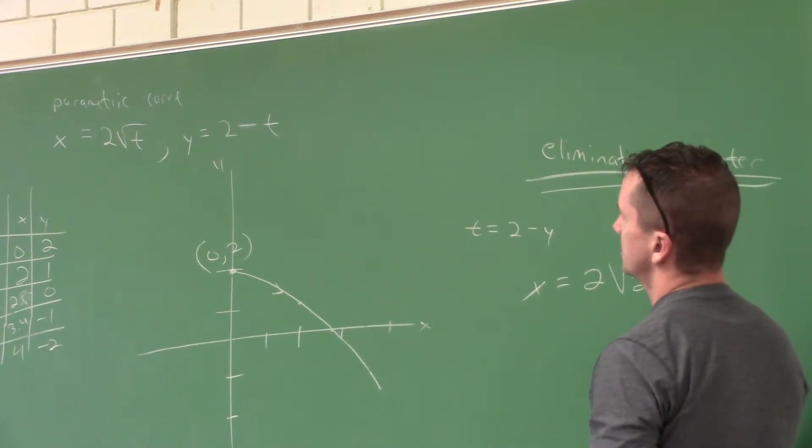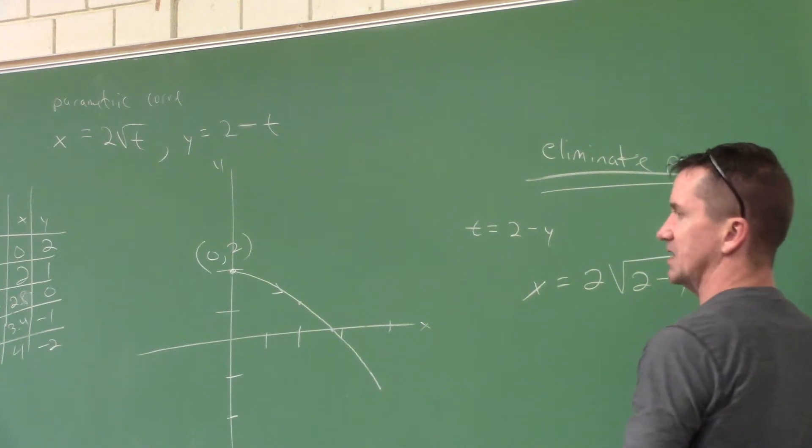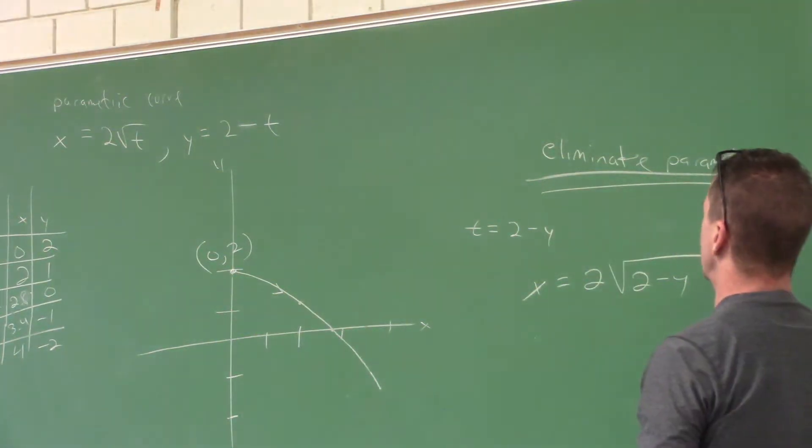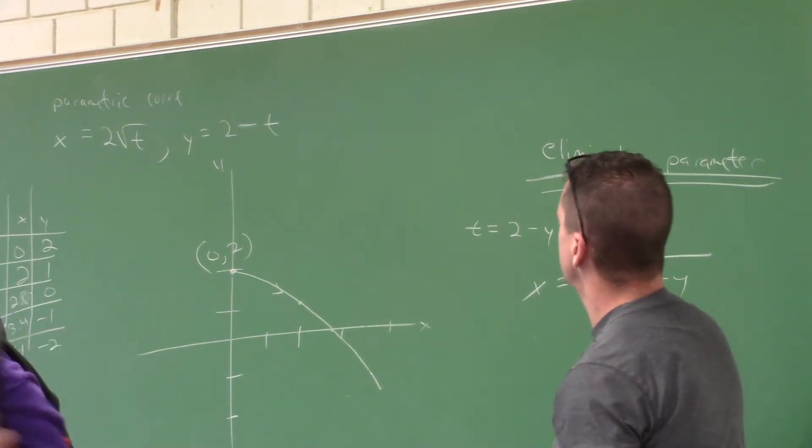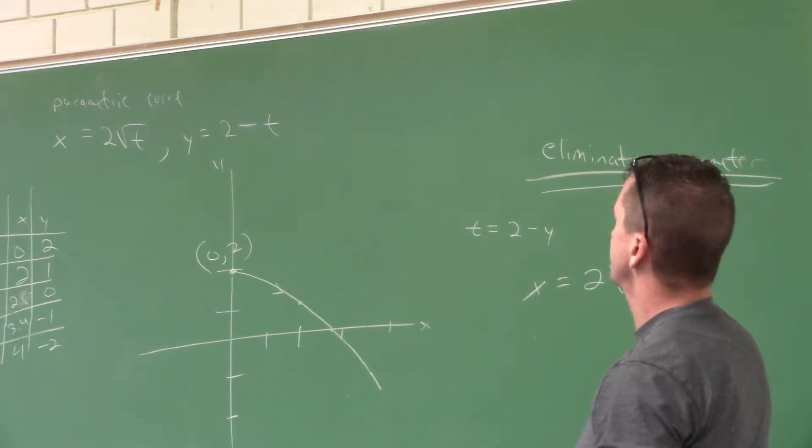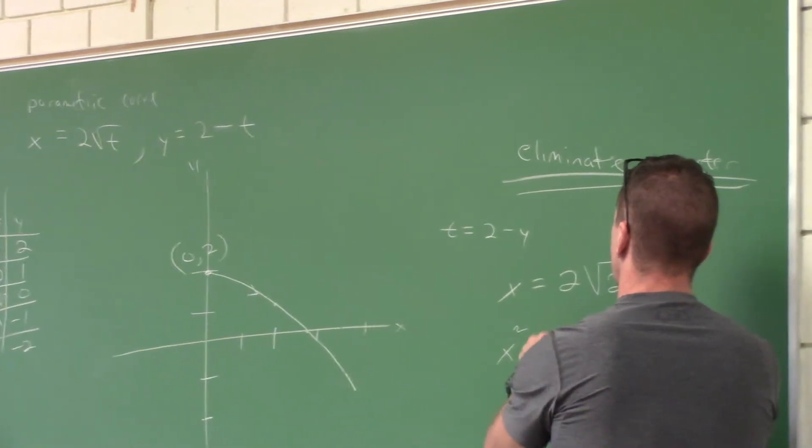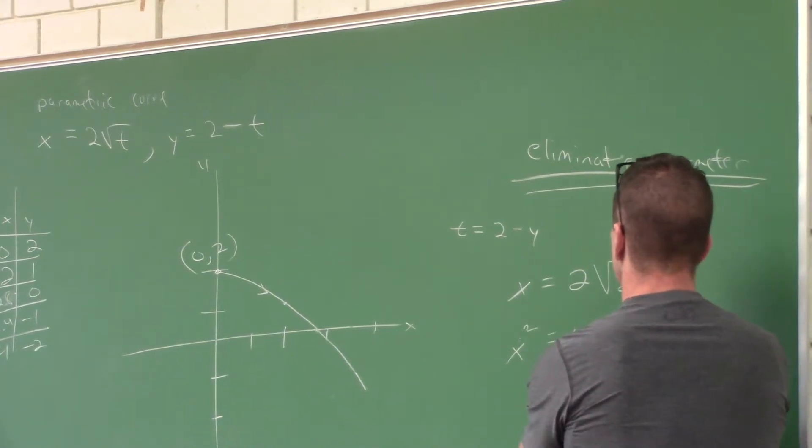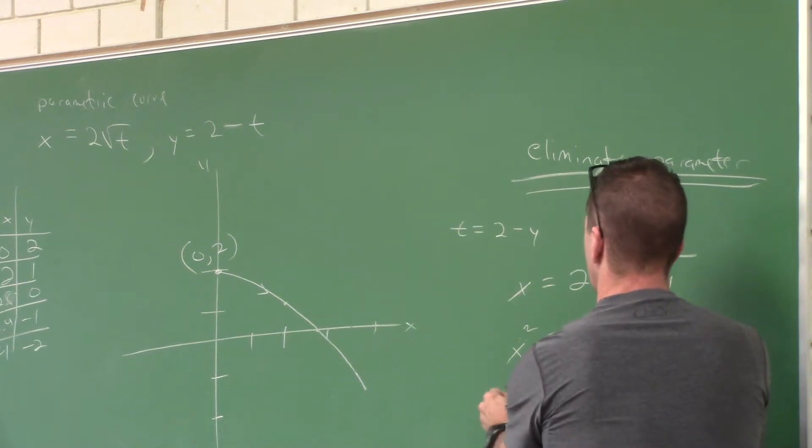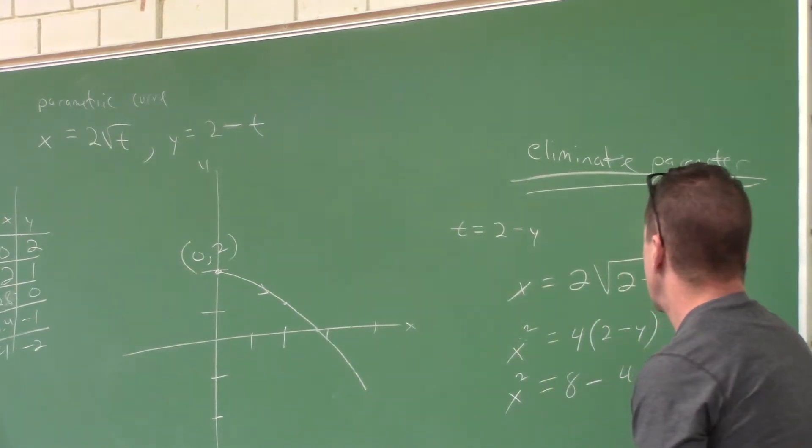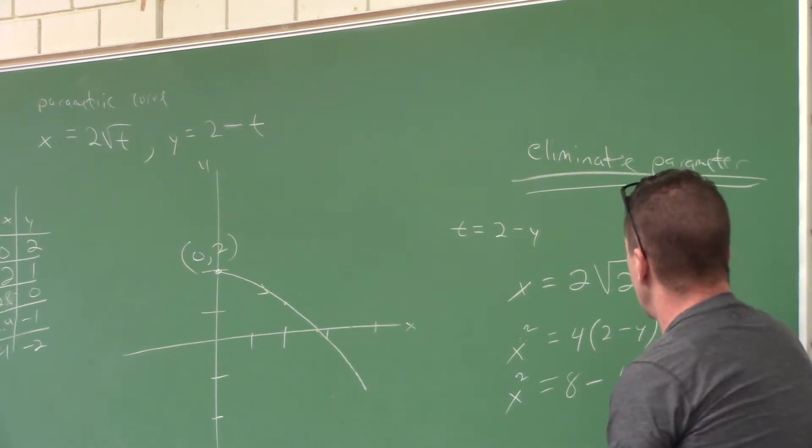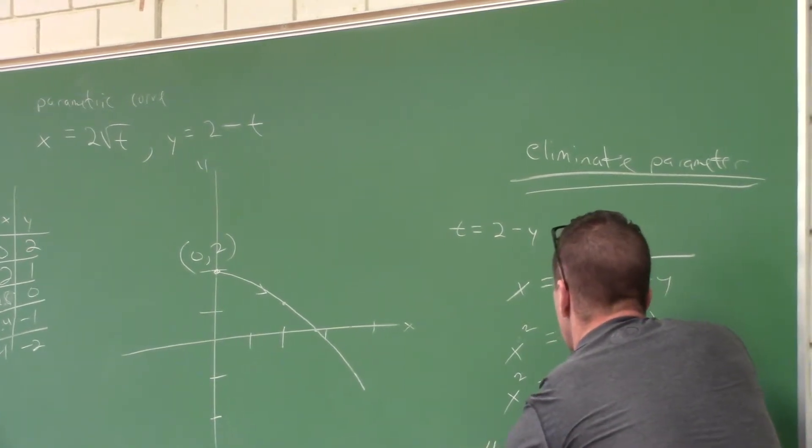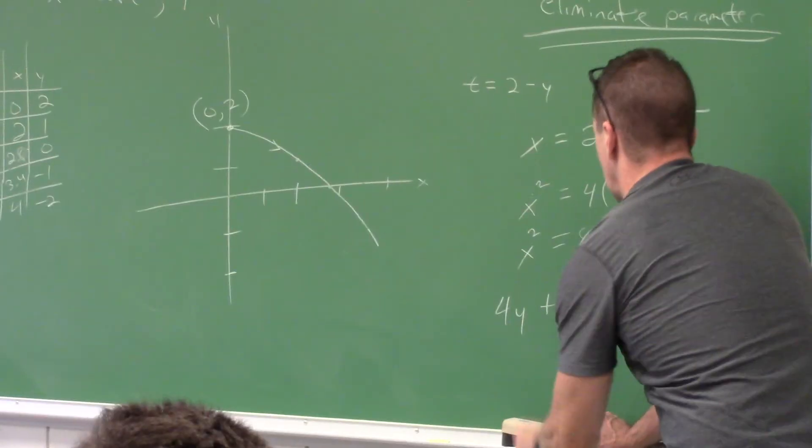So x will equal two times the square root of two minus y. Does anyone care with that? And that might not help much, but what if you square both sides? You might make sense of this thing. You get what? X squared equals two times, parentheses, two minus y. Four minus two y. X squared would equal what?